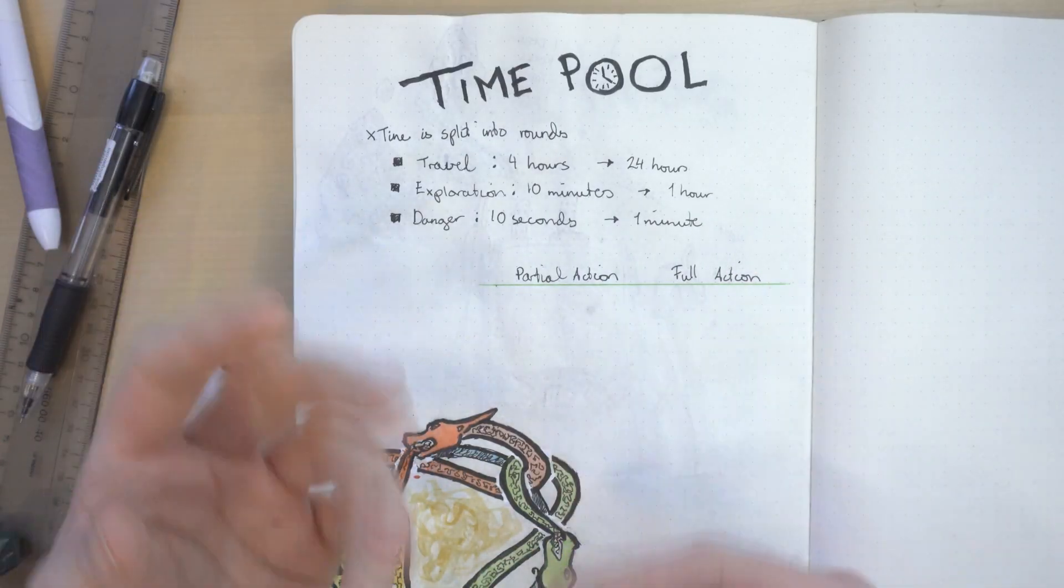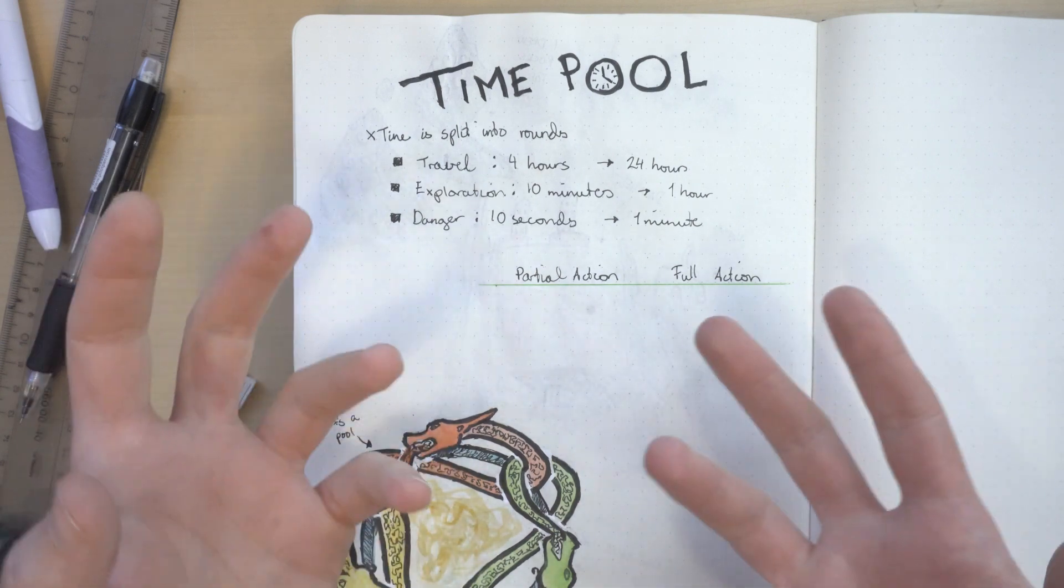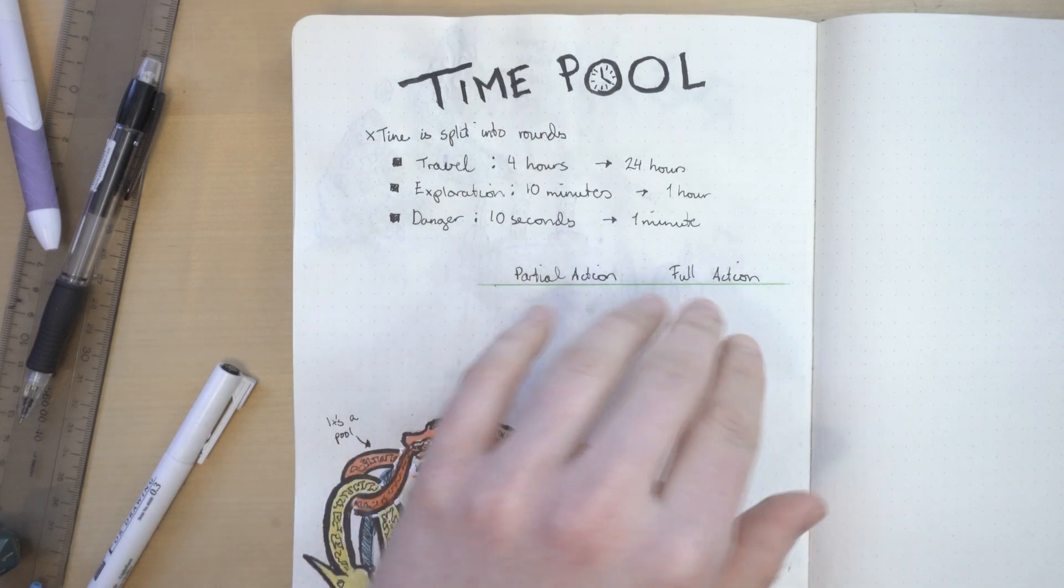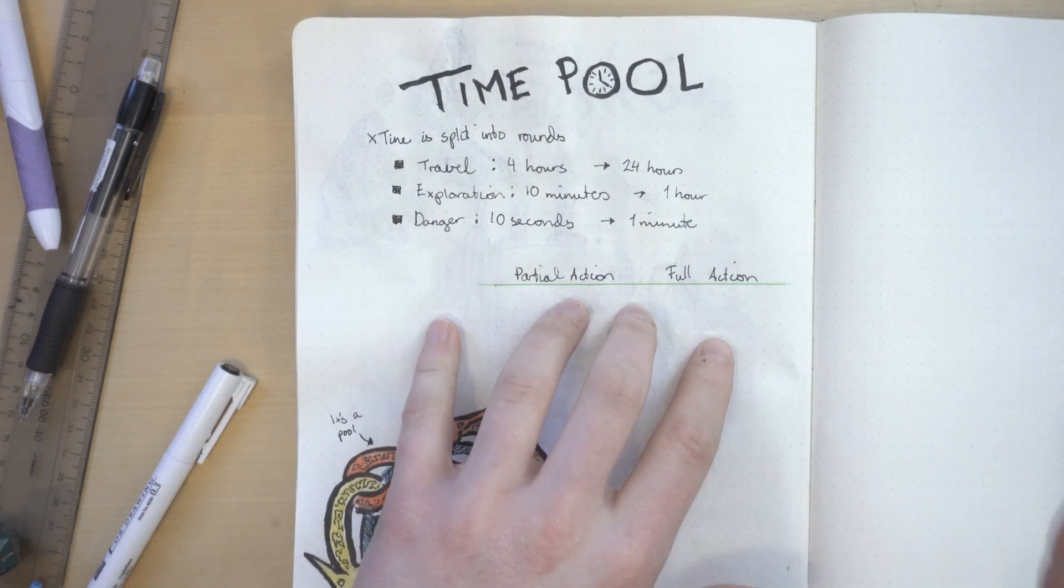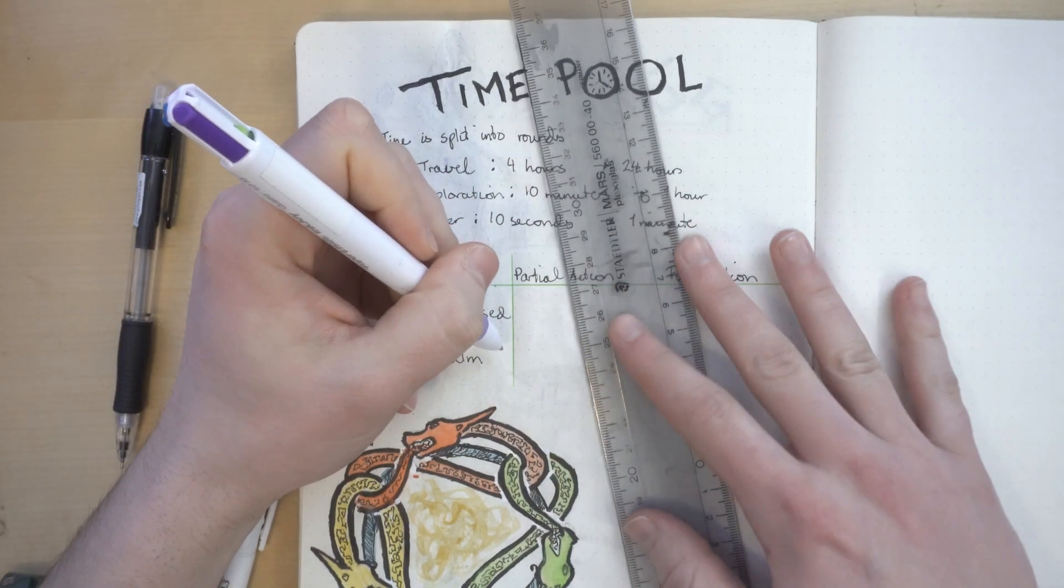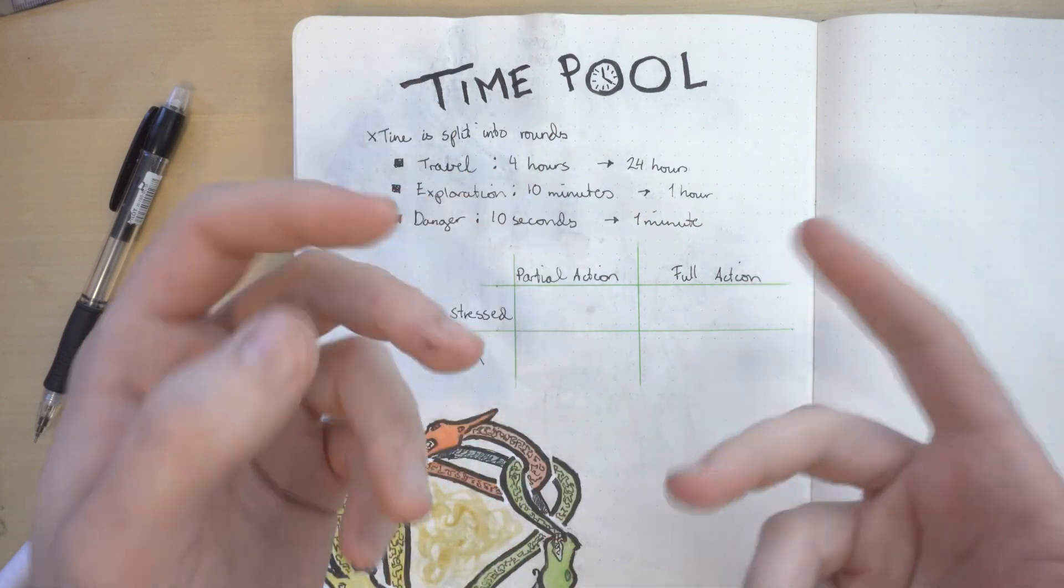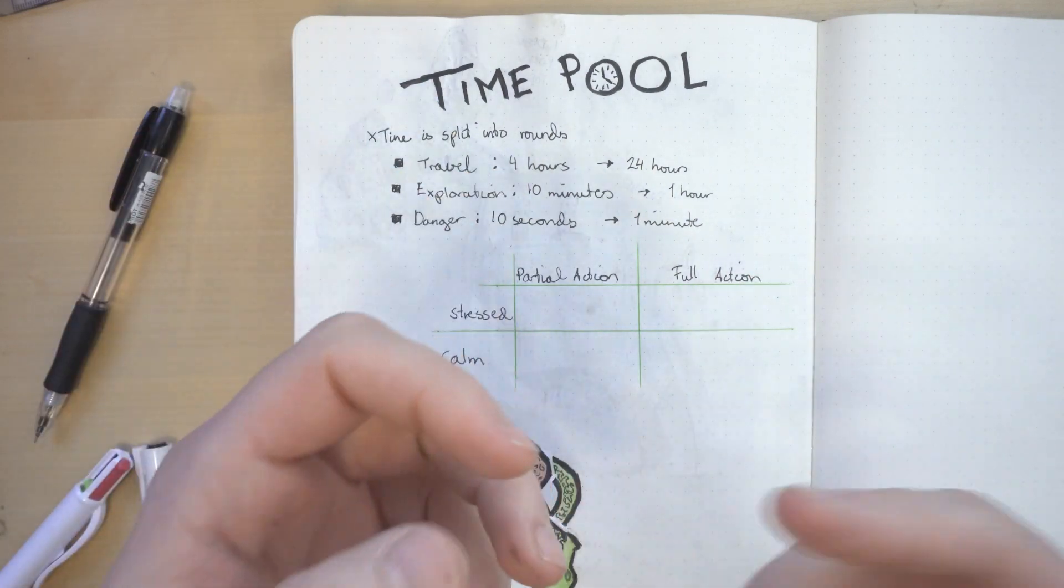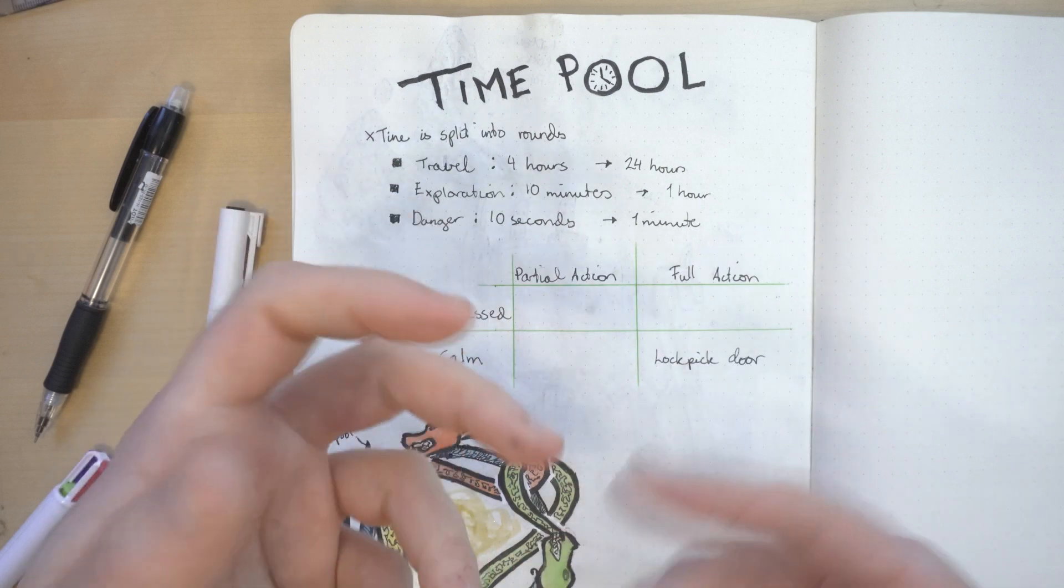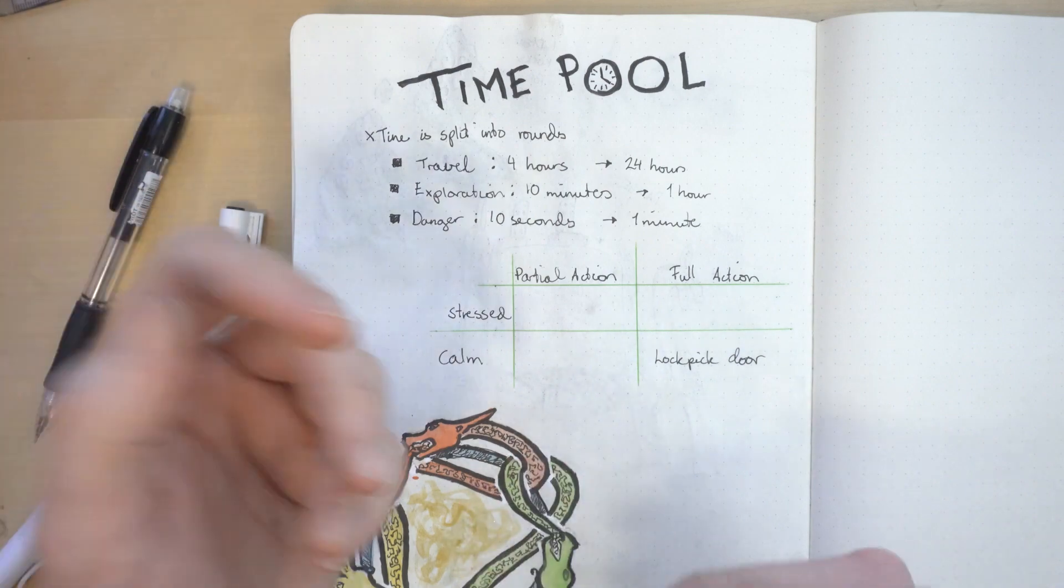So where's the fun in this? Well, I think games should have meaningful decisions, and that is where the players can start to decide their characters' action. Because not only do I categorize actions in full and partial actions, but also stressed and calm actions. Stressed actions are loud, sloppy, and fast, while calm actions are careful, silent, and time-consuming. If you have a locked door in front of you, you can use a calm full action to lock pick the door. It will take 10 minutes, but it's most likely an automatic success.